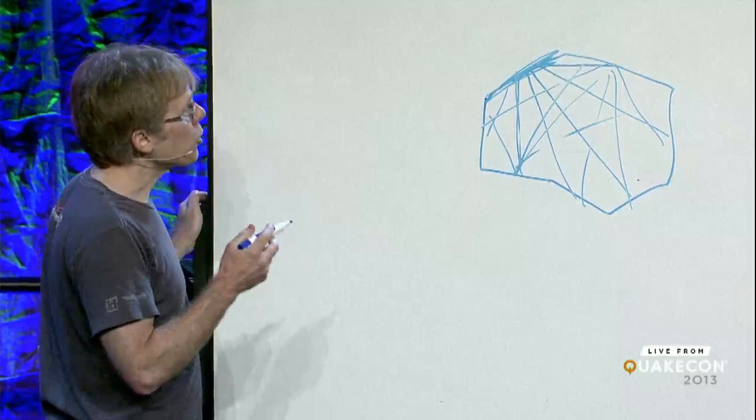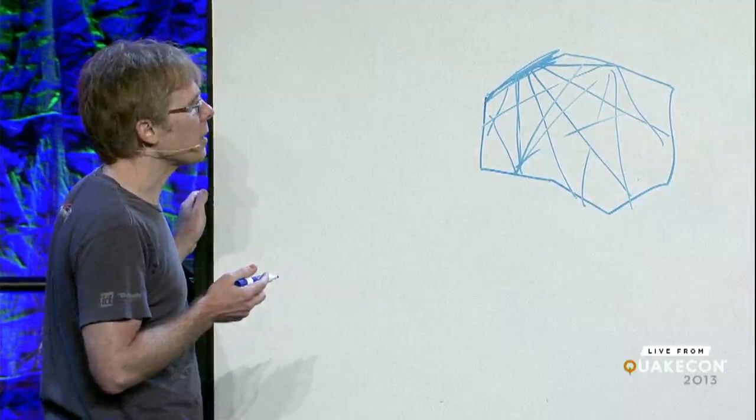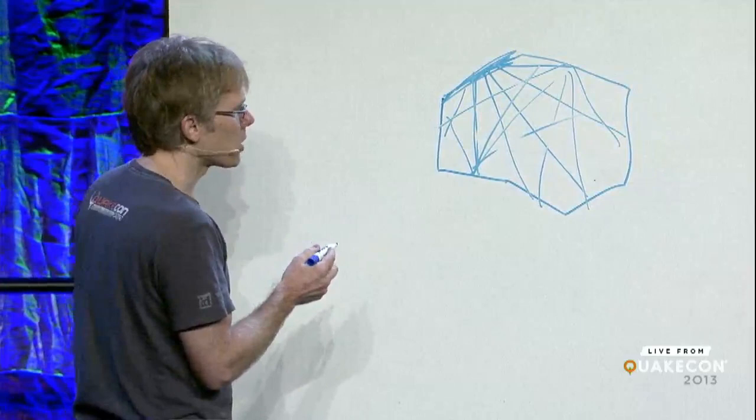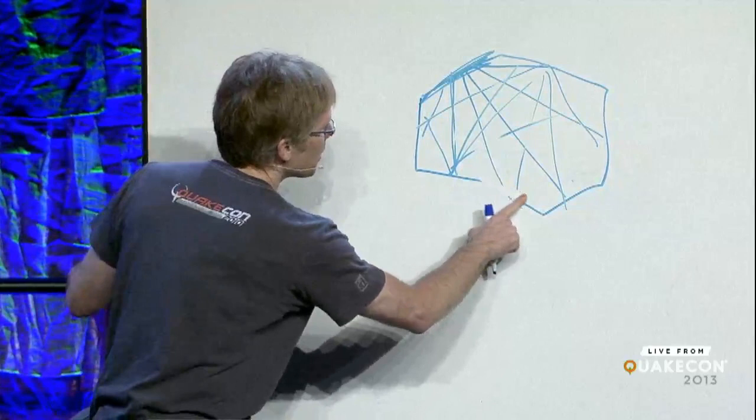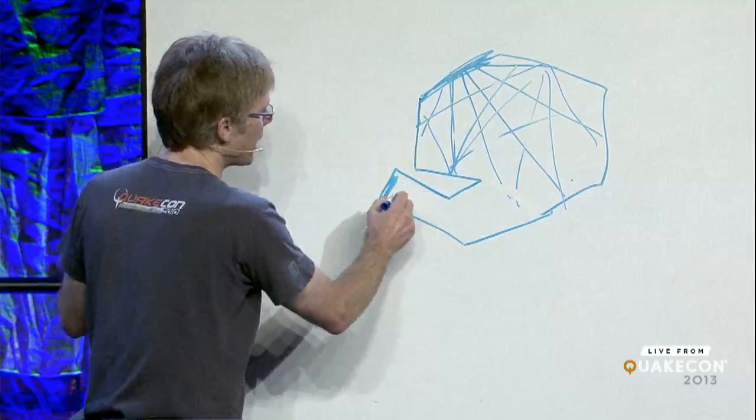There are two reasons why radiosity is not a particularly relevant technique for computer graphics anymore. One aspect it glossed over was the notion of occlusion — where if you've got a surface that goes around a dark corner, it's clear that it can't see certain surfaces at all. It can see some surfaces, part of another surface, a fraction of it.